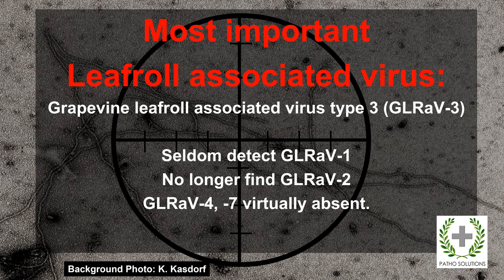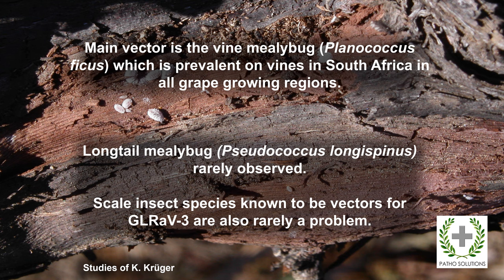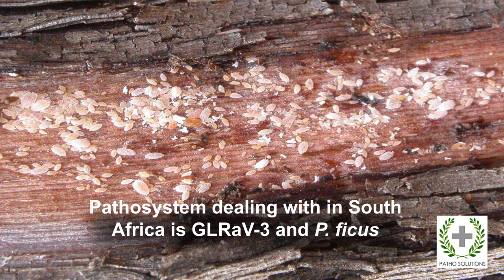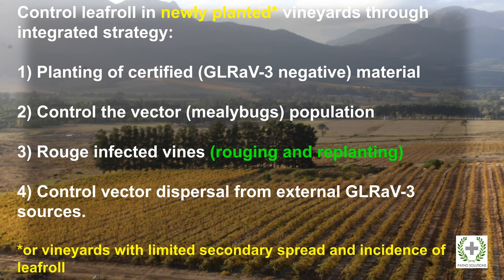The most important leafroll-associated virus for us in South Africa is type 3. We seldom detect type 1, almost never detect type 2, and types 4 and 7 have never really been present much in the industry. Turning to the vector, the main vector is the vine mealybug Planococcus ficus, which is prevalent on vines in all grape-growing regions. Occasionally we also get the long-tailed mealybug Pseudococcus longispinus, but this is more rarely observed. Scale insects, also known to be vectors for type 3, are rarely a problem. So the pathosystem we're dealing with in South Africa is type 3 and Planococcus ficus, mirroring the situation in California where Planococcus ficus has been introduced.